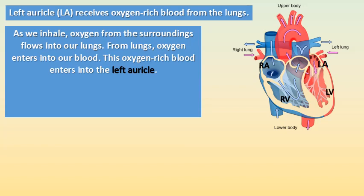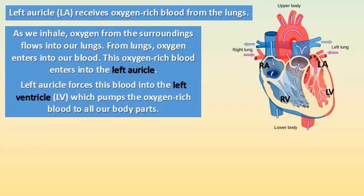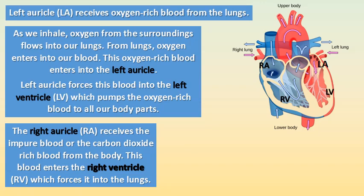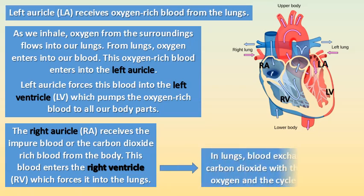The left auricle receives oxygen-rich blood from the lungs. As we inhale, oxygen from the surroundings flows into our lungs, and from there oxygen enters into our blood. This oxygen-rich blood enters the left auricle, which forces it into the left ventricle. The left ventricle then pumps the oxygen-rich blood to all our body parts. The right auricle receives impure, carbon dioxide-rich blood from the body. This blood enters the right ventricle, which forces it into the lungs. In the lungs, blood exchanges the carbon dioxide with inhaled oxygen, and the cycle repeats.